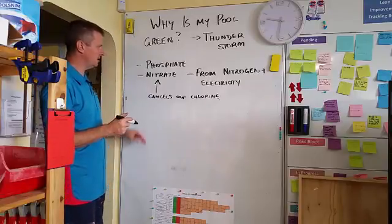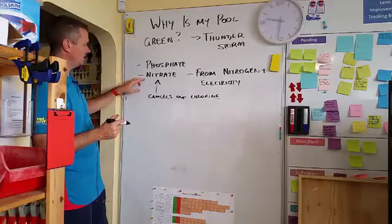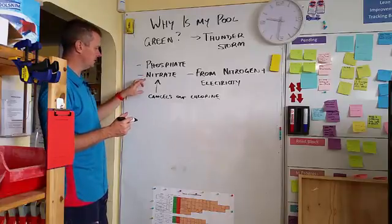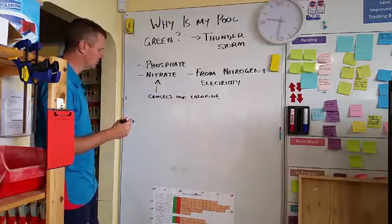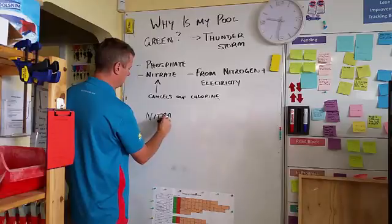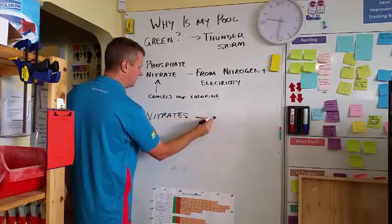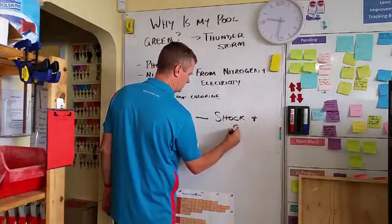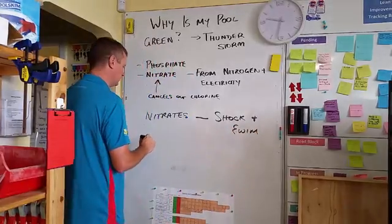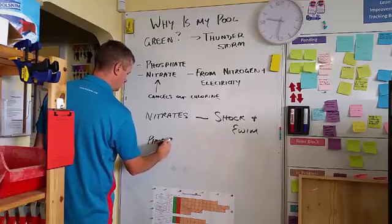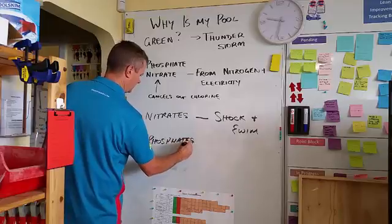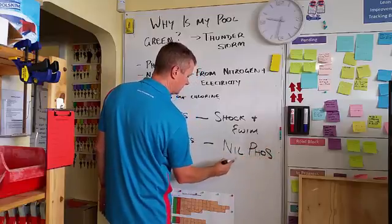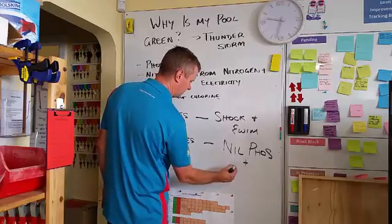So, what we basically do to treat that is... Now, chlorine won't get rid of nitrates. It just doesn't get rid of them at all. I think it's because it's got something to do with it cancelling out the chlorine that's in the pool. So nitrates we treat with shock and swim. Nitrates we treat with shock and swim. Nylphos takes those out. And usually, nylphos will make the water cloudy. So plus some sort of a clarifier, a table or a clarifier.